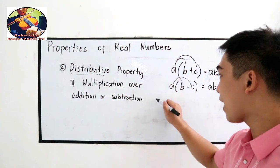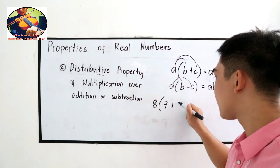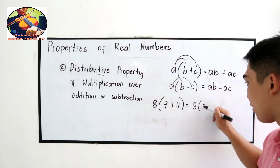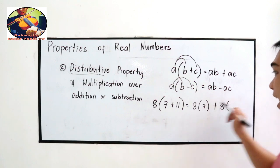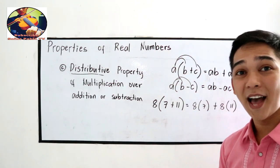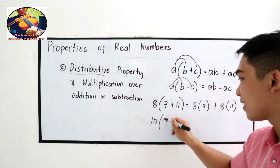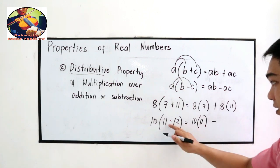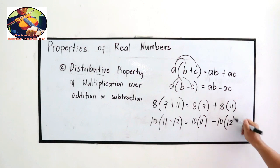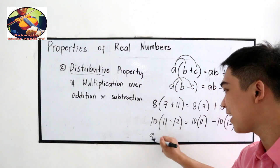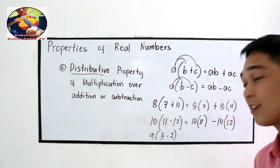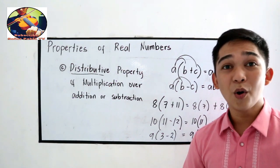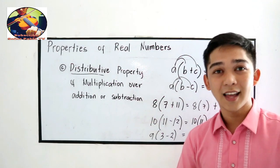Let's try some examples. 8 times (7 + 11) equals 8 times 7 plus 8 times 11. Another example: 10 times (11 − 12) equals 10 times 11 minus 10 times 12. And 9 times (3 − 2) equals 9 times 3 minus 9 times 2. That is the distributive property of multiplication over addition or subtraction.